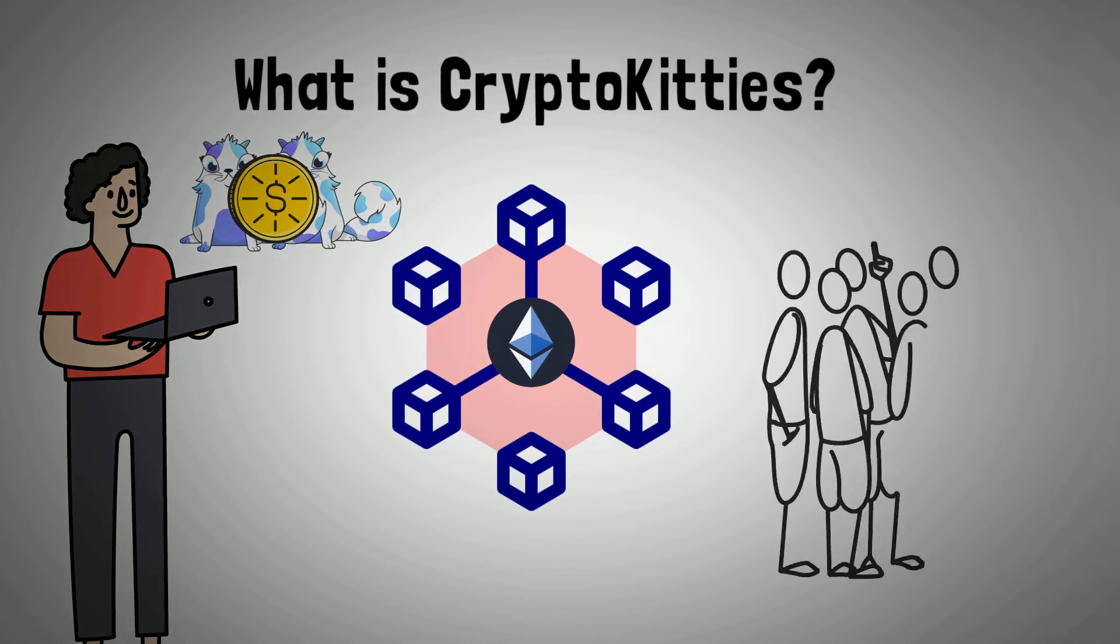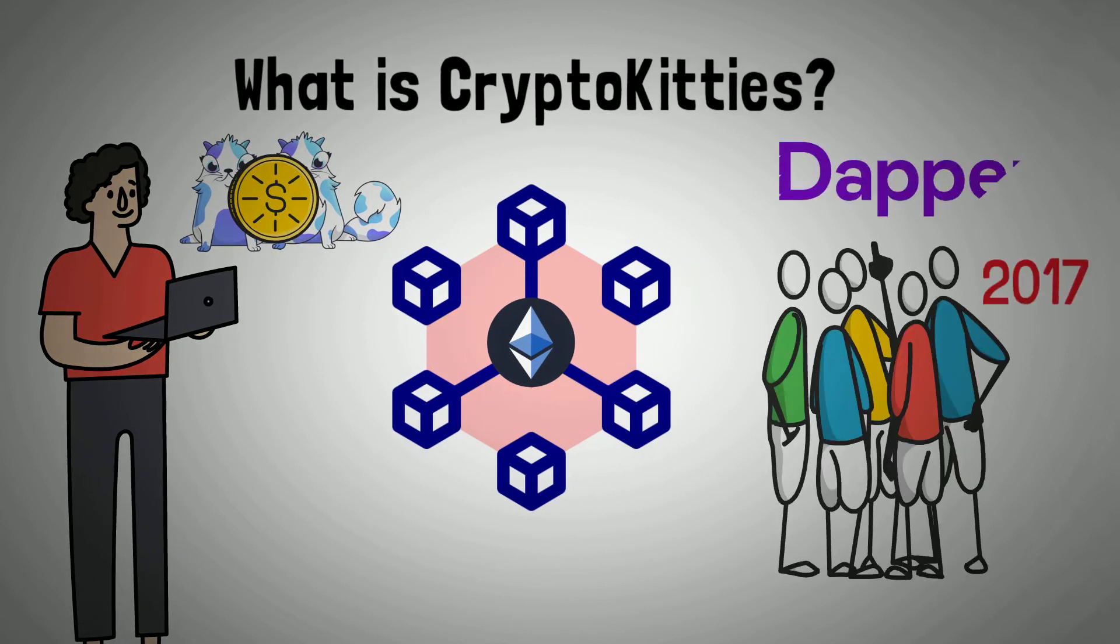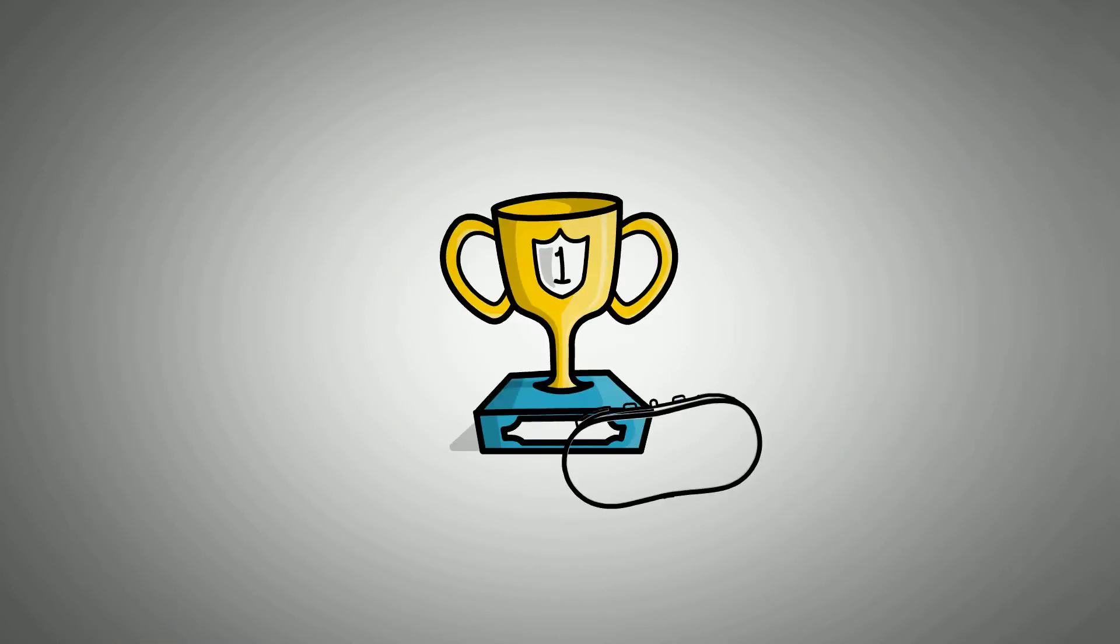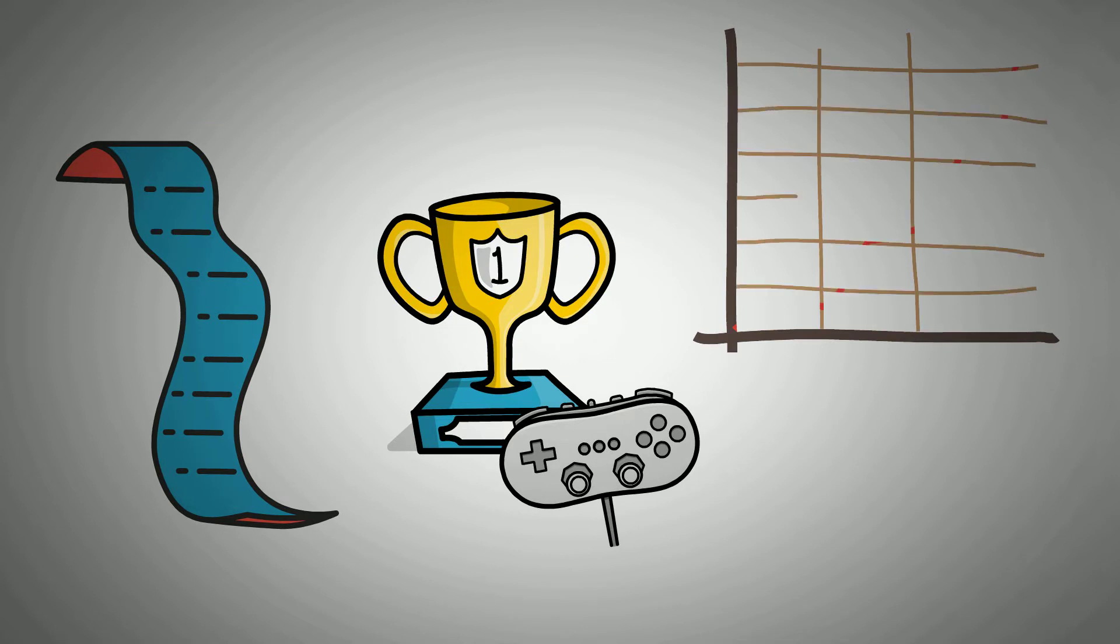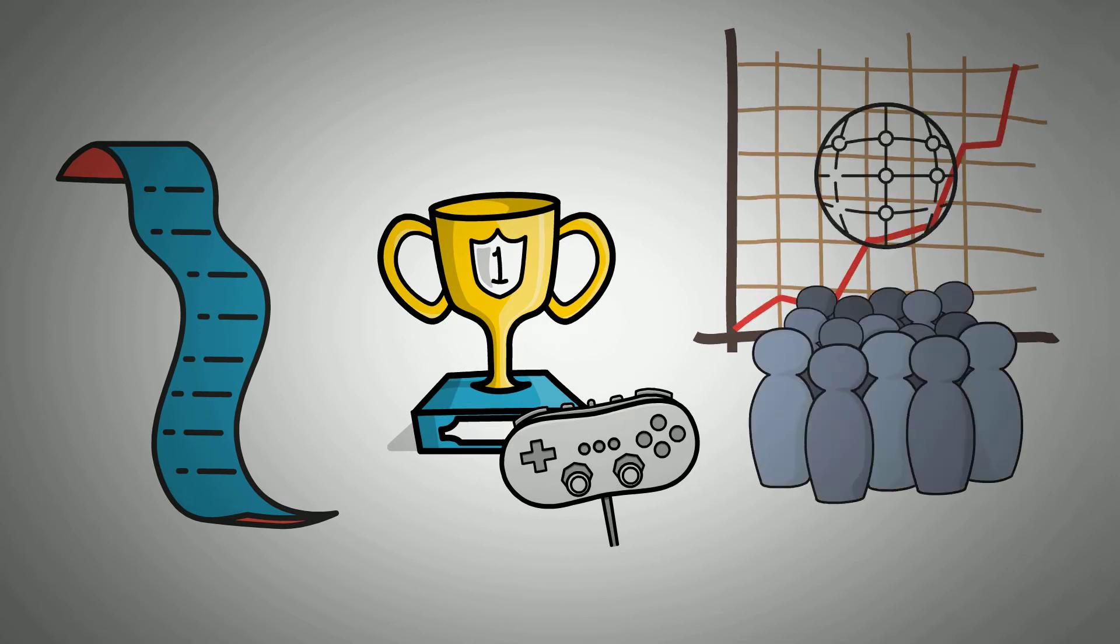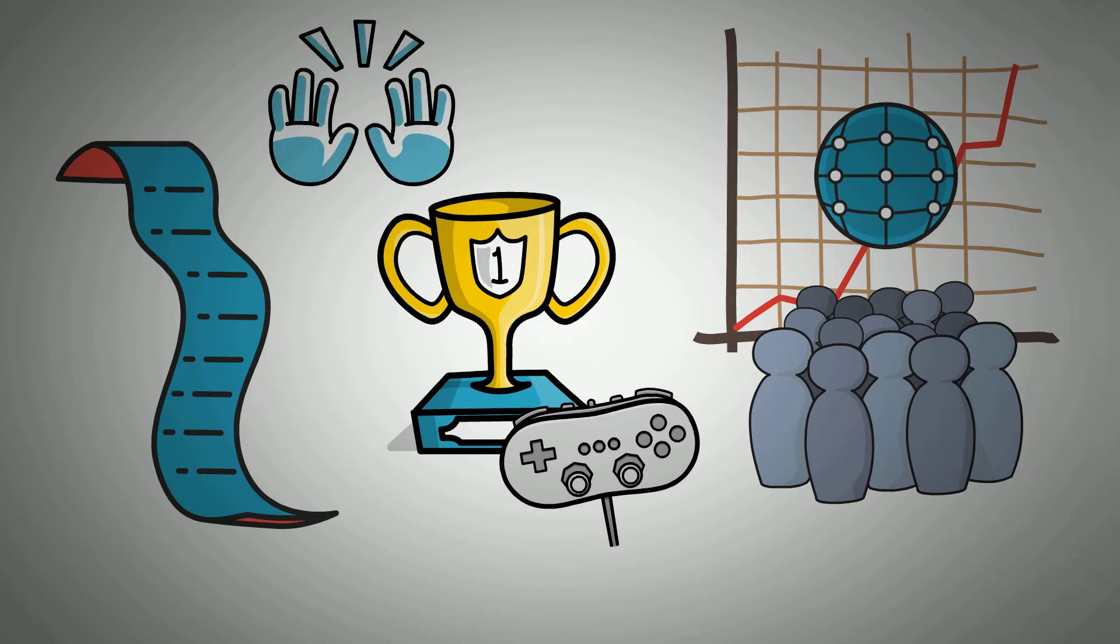Developed and published for public use in 2017 by Dapper Labs, CryptoKitties is regarded as the earliest creation of blockchain-based games for recreational purposes. Its popularity rose sporadically in 2017 as millions of consistent users on its website caused one of the greatest anomalies on the Ethereum network, forcing a temporary blockage which was later resolved hours later.